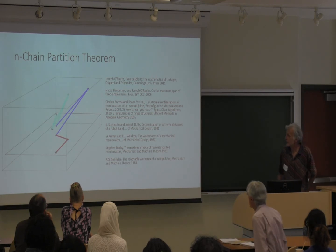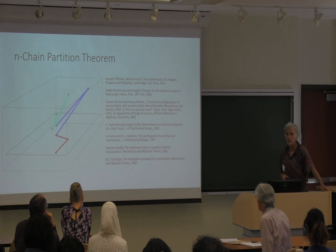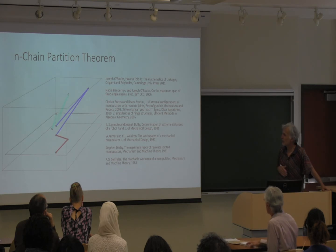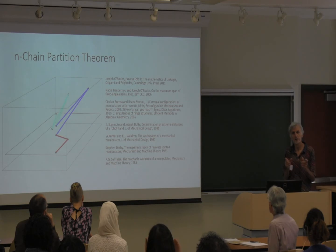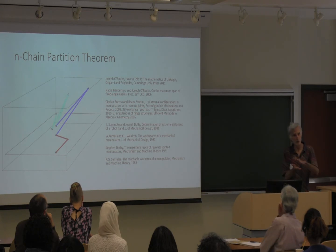There's this n-chain partition theorem. These are the people involved — Joseph and his student from a long time ago. I also found out that Strain had written some very good work about it, referencing back to robotic arms and manipulators. The general idea is that if you have a chain of links where each of the angles is fixed but can be different, and you want to maximize the distance between the endpoints, in the end it's going to come into planar sections — the first few links on one plane, the next few links on another plane.